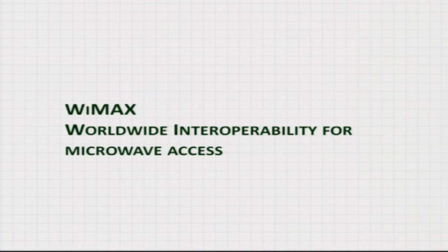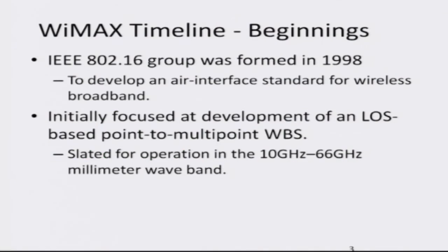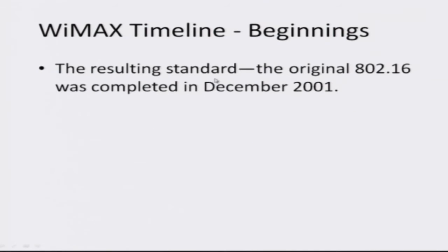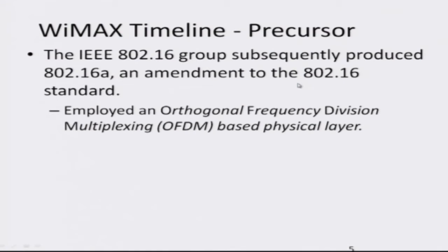WiMAX stands for Worldwide Interoperability for Microwave Access. The technical name for it is 802.16, and this group was formed in 1998 to develop an air interface for broadband wireless applications — to really increase the wireless data rates to what you have on ethernet broadband networks. It was initially intended only for line-of-sight, where you have very good signal strength between devices, and this original standardization was completed in 2001.